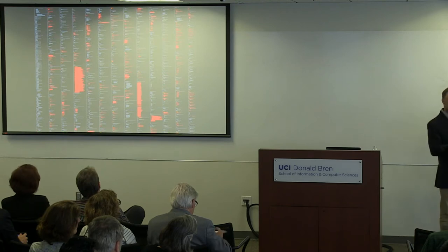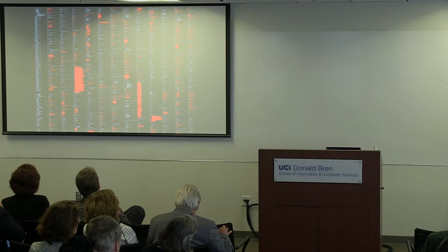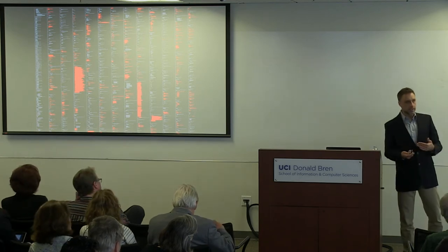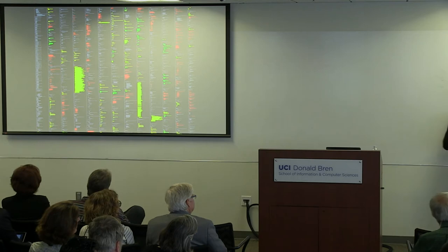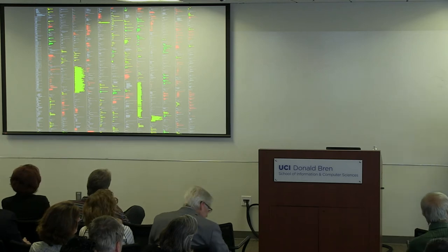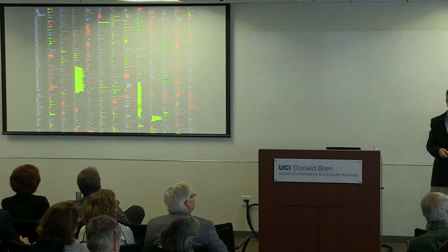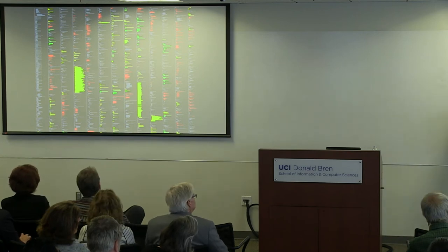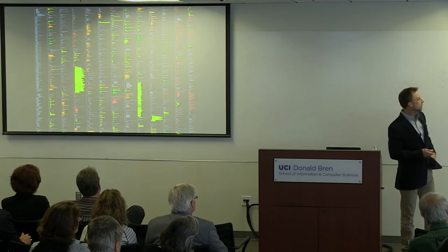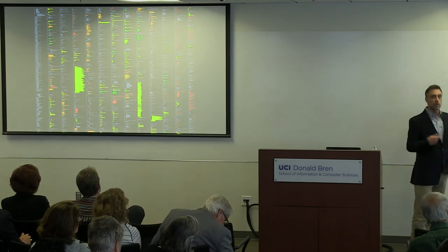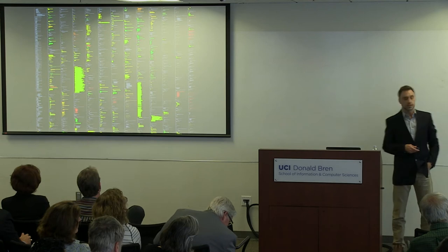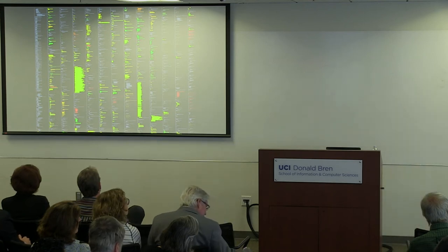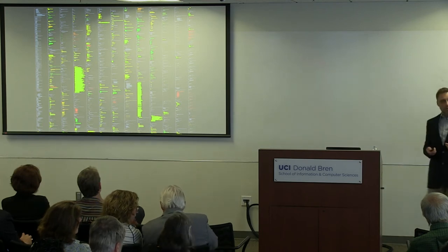Similarly, we can look at a failing test case and highlight its coverage in red. But the really interesting part of the Tarantula technique is to look at a combination of passing and failing test cases. Here I'm showing the coverage of one passing and one failing — lines colored green are executed only by the passing test case, lines colored red are executed only by the failing test case. As we add more and more passing and failing test cases, the coloring of the lines becomes more revealing of which parts of the code contribute most to the failing outcome.